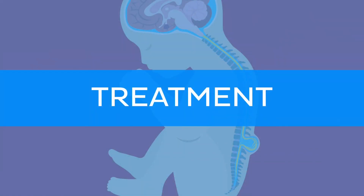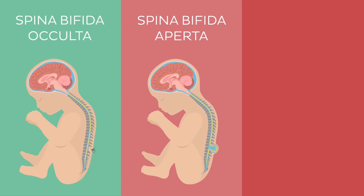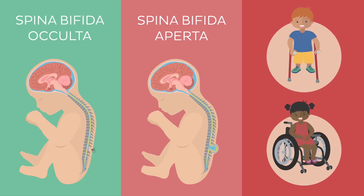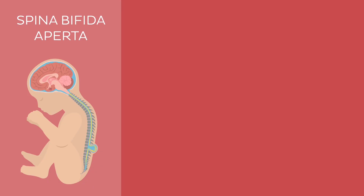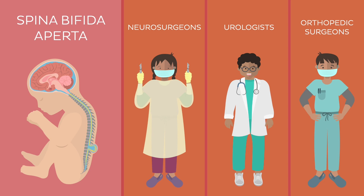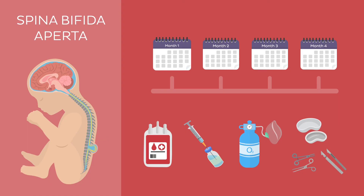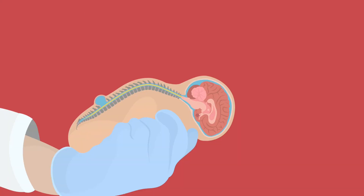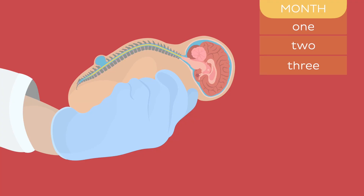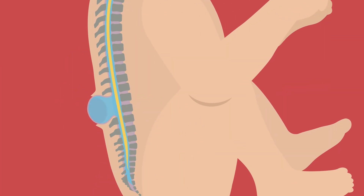Now let's talk about treatment. Spina bifida occulta doesn't usually require treatment. However, spina bifida aperta does, since it usually causes an array of disabilities, which is why several medical professionals are included in its treatment, such as neurosurgeons, urologists and orthopaedic surgeons. The timing and organisation of the surgery depends on the type of spina bifida. In the case of meningocele, the surgery is usually done within the first months of life. The goal of this surgery is to remove the protruding sac, push the meninges back into the spinal canal, and close the bony defect.